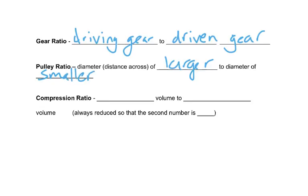And the third one we'll look at is a compression ratio, and this is the expanded volume to the compressed volume. And this specific ratio is always reduced so that the second number is one, and we'll look at that as well.